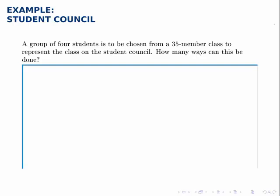The group of four students is to be chosen from a 35 member class to represent this class on the student council. How many ways can this be done?